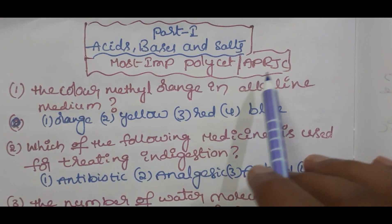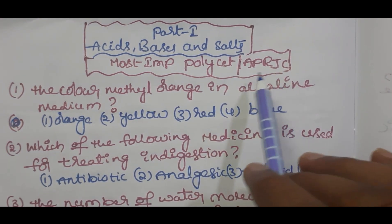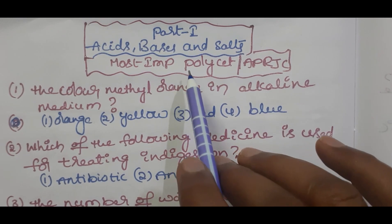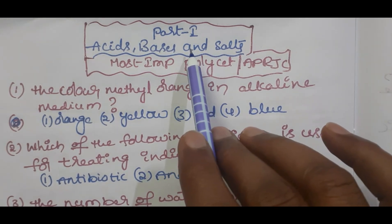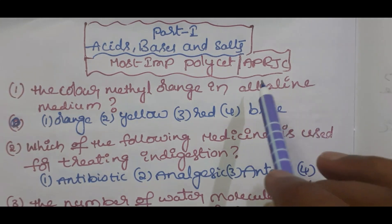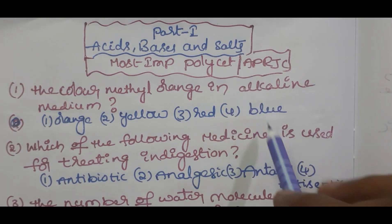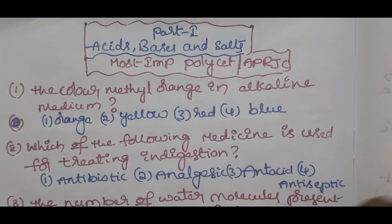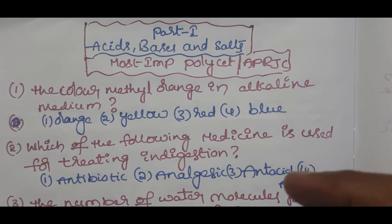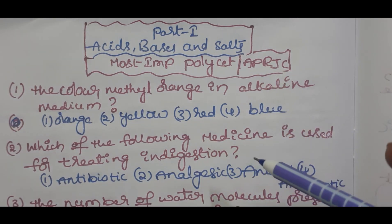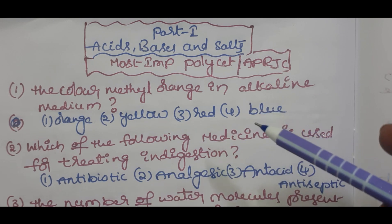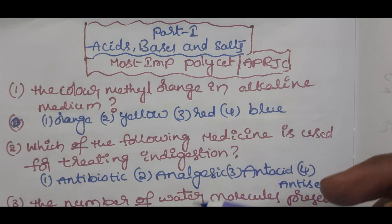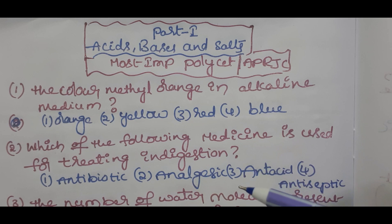POLYSET and APRJC 2022 most important bits from chemistry acids, bases and salts. Questions and options are given students. In these 26 questions you can try the answers and send the answers in comments. You can check the answers in the description of this video. Please try to send the answers in the form of comments after that you can check the answers in the description.